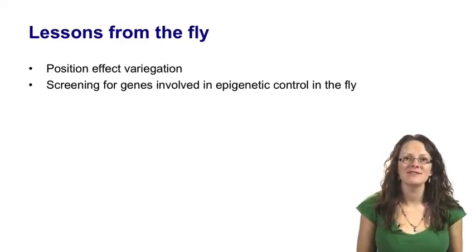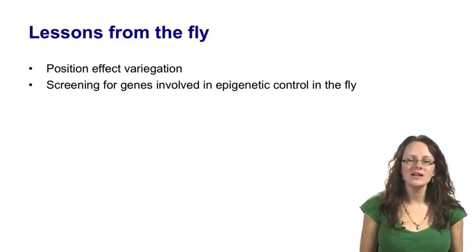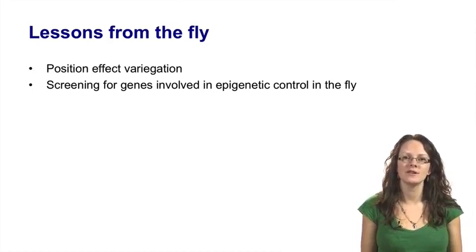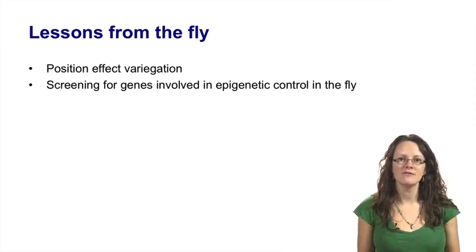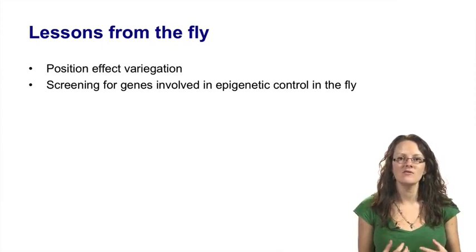In this final lecture for week three, I'd like to think about other things we've learned about epigenetic control from the fly. In the last lecture, we thought about fly dosage compensation, which alerted us to the idea that there could be upregulation of the active X chromosome in mammals. We've actually learned a huge amount about epigenetic control from studies in the fly, much of which has come from studies of position effect variegation and mutagenesis screens done in the fly to find modifiers of position effect variegation — a way to find new epigenetic regulators.